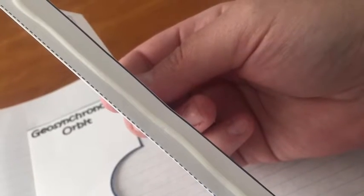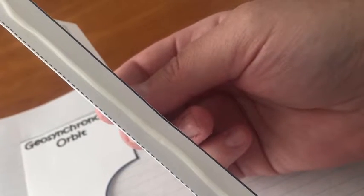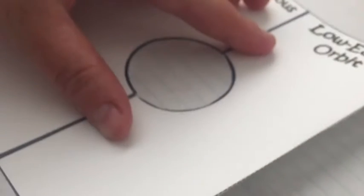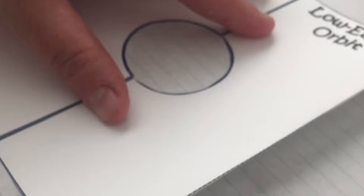Glue the tabs into your notebook, making sure that both sides align in the middle, just like they did when they were stuck together before you cut them apart.